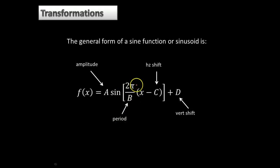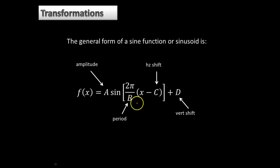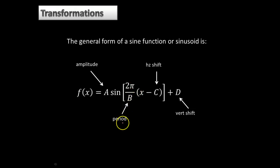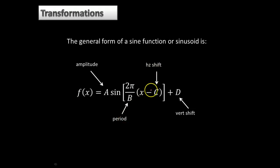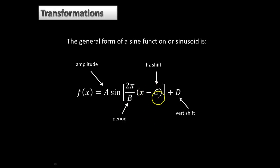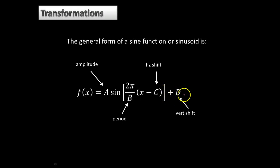And 2π over this b variable represents the period of the function. So whatever this fraction comes out to be, 2π over b, b is the period in that fraction. On the inside, along with x, if you have a plus or minus component, that's going to give you a horizontal shift. And then on the outside, if you have a plus or minus, that would give you a vertical shift.